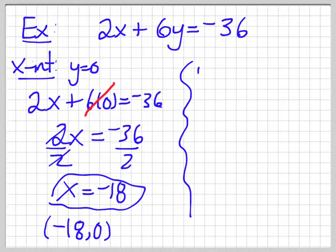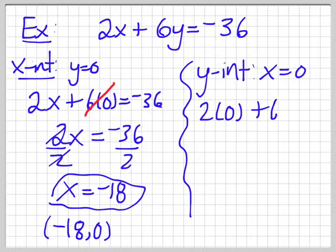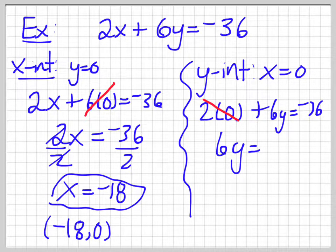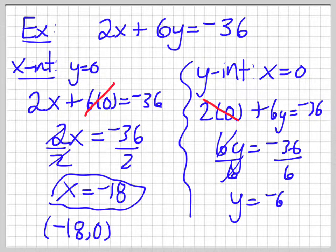Alright, so the next one would be the y intercept, of course. And I let x equal 0. So, I'm left with 2 times 0 plus 6y is equal to negative 36. Cancel this out. So, 6y is equal to negative 36. Divide both sides by 6. Y is equal to negative 6.